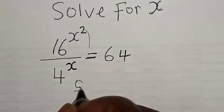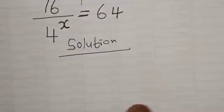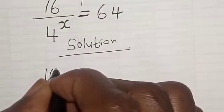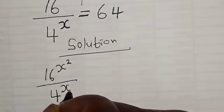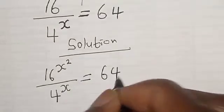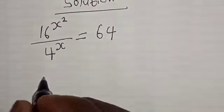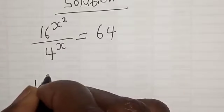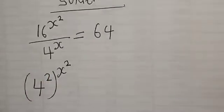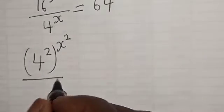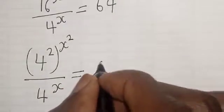Solution. We have the given equation: 16 raised to the power s squared divided by 4 raised to the power s is equal to 64. Then, 16 raised to the power s squared can be expressed as 4 squared raised to the power s squared, divided by 4 raised to the power s, is equal to 64.